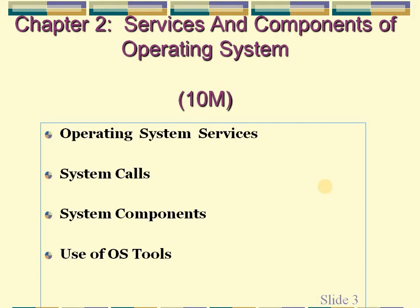The concepts of this unit are: operating system services, system calls, system components, and use of operating system tools. An operating system provides the environment within which programs are executed. As only the operating system can actually perform input/output operations, user programs have to request for all such operations from the operating system. In this unit we are going to discuss what services an operating system provides.